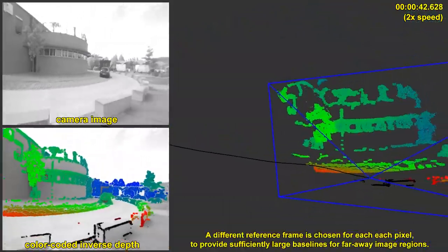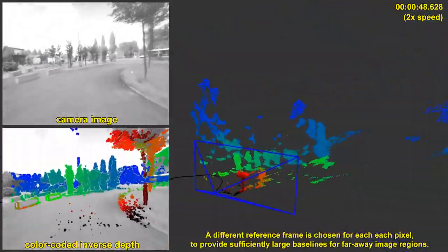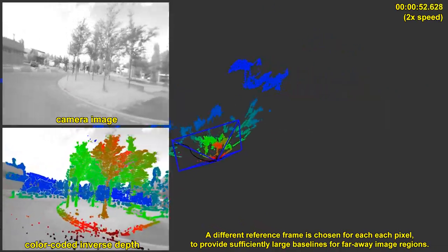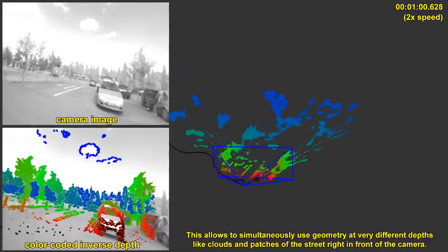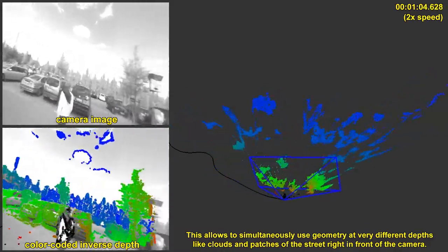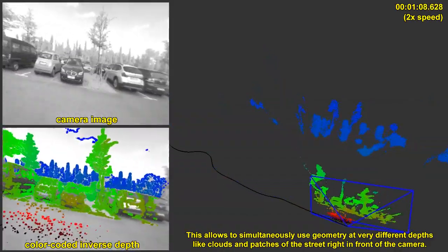A different reference frame is chosen for each pixel to provide sufficiently large baselines for far away image regions. This allows to simultaneously use geometry at very different depths. Here for example clouds and patches of the street right in front of the camera.